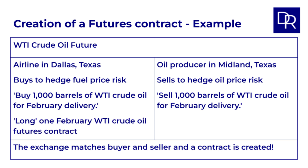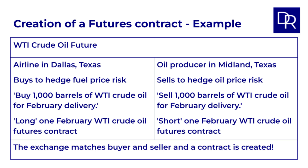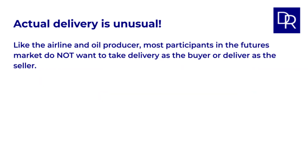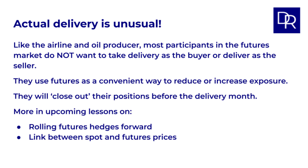The Dallas Airline is now long one February WTI crude oil futures contract — they've agreed to buy oil at a set price in February. The Midland oil producer is short; they've agreed to sell oil. Just like with many commodities, the airline probably doesn't want 1,000 barrels of crude oil physically delivered to Dallas, and the Midland producer isn't going to truck oil to the airline's hangar. They're using futures to manage price risk, so they will likely close out their positions. Delivery in oil futures is unusual for most participants, but the possibility of delivery is what connects the futures price to the spot price of crude oil in the physical market.